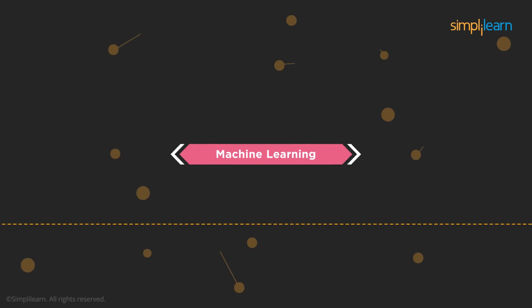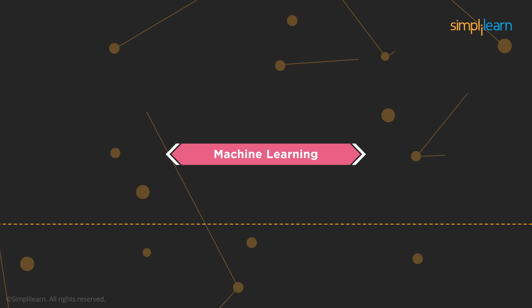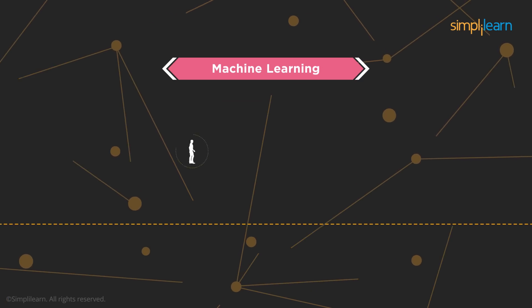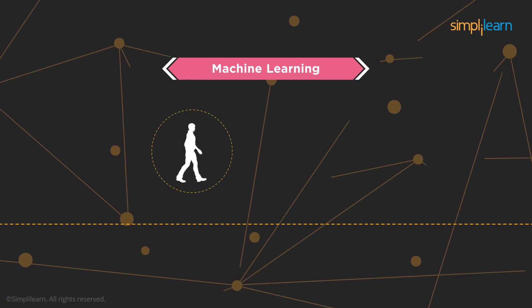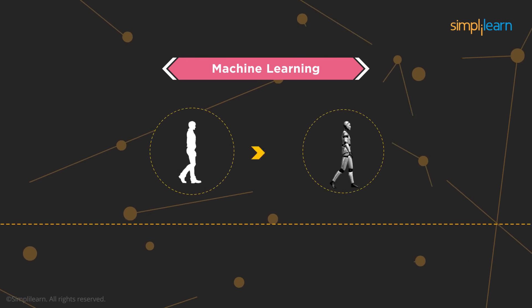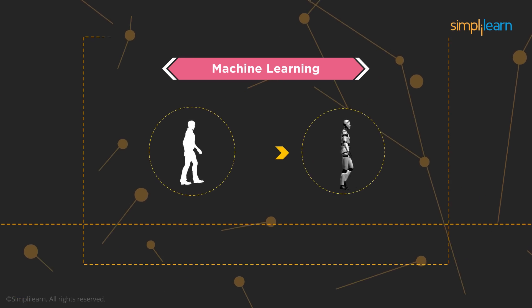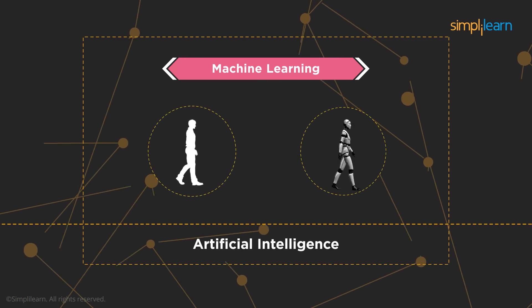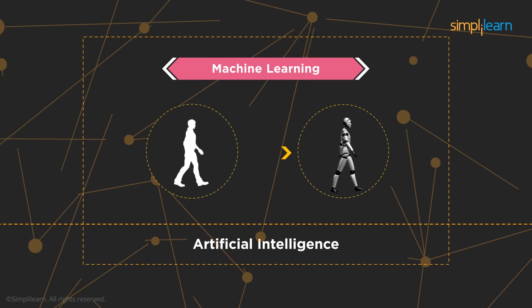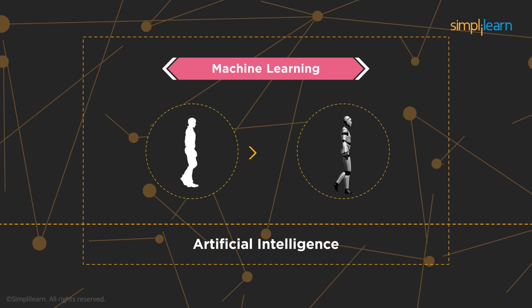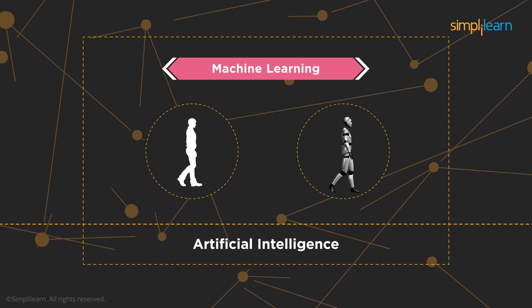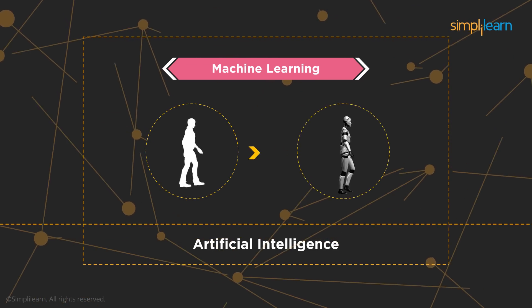Machine learning has engulfed every part of our lives. Machine learning uses algorithms to mimic human learnings in machines — it is a subset of artificial intelligence. To simplify this idea, let us take up a small story.